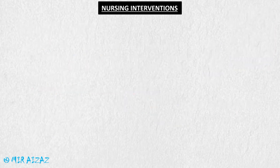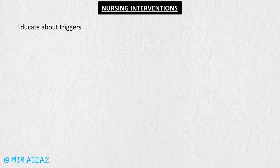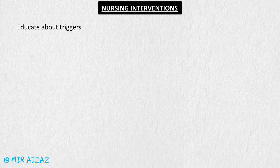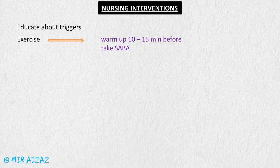The nursing interventions include educating the patient about triggers — situations or objects which can trigger an asthma attack, such as pet dander, molds, pollens, and dust. The patient is educated about these triggers and advised to avoid them to prevent an asthma attack. If a patient with asthma is exercising, they are likely to get an asthma attack.